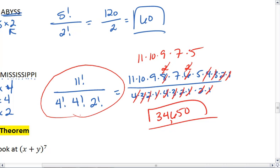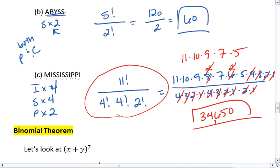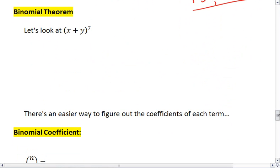Or if I just type this into my calculator, I'll get the same exact answer of 34,650. That does it for these notes. In the next set of videos, I will be looking at the binomial theorem.